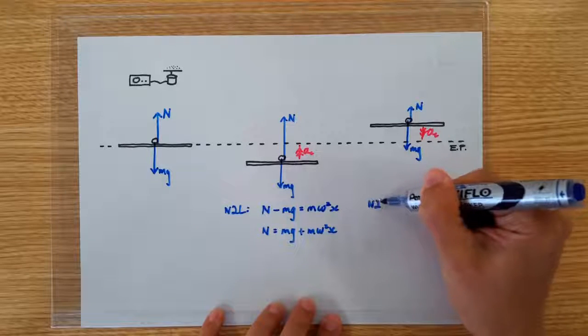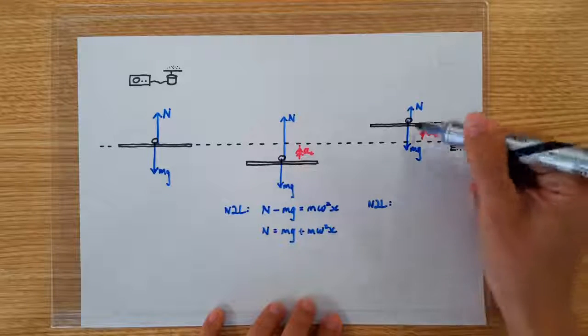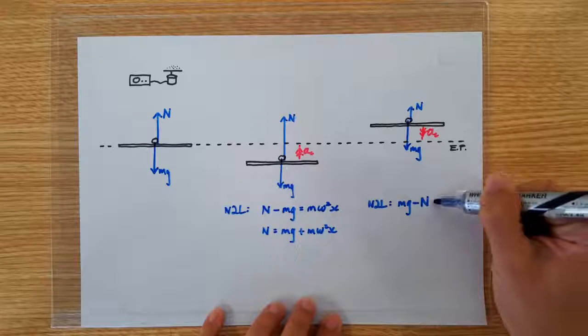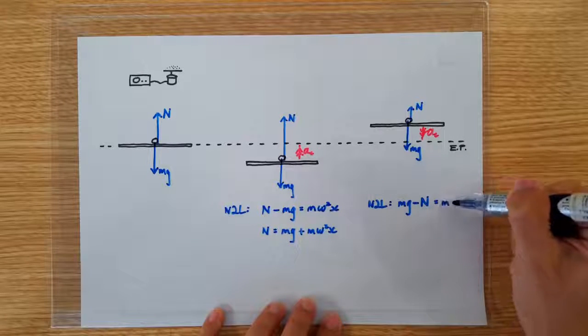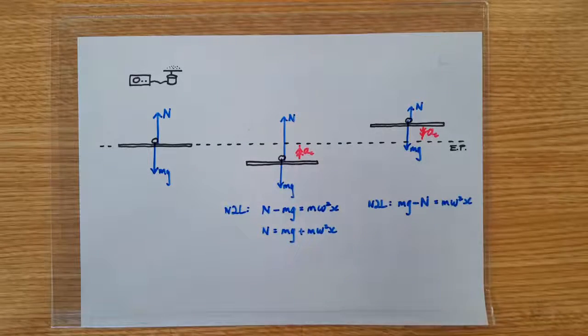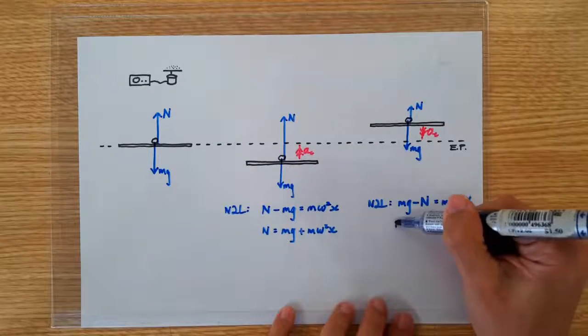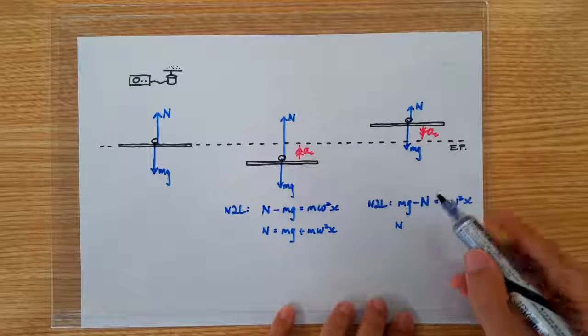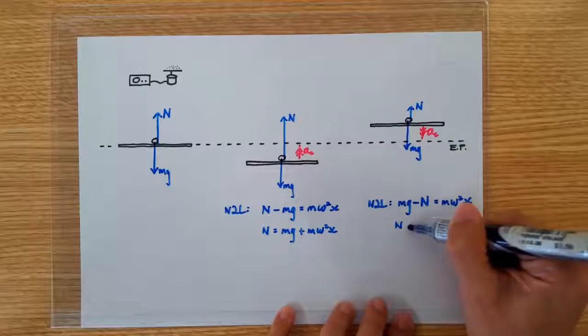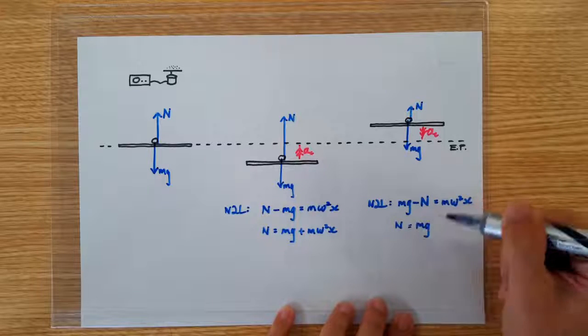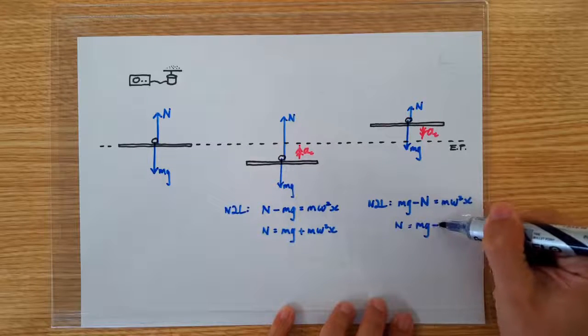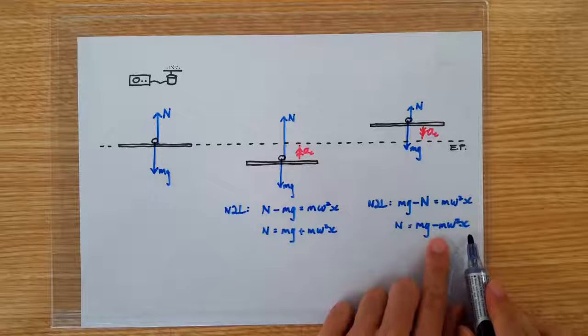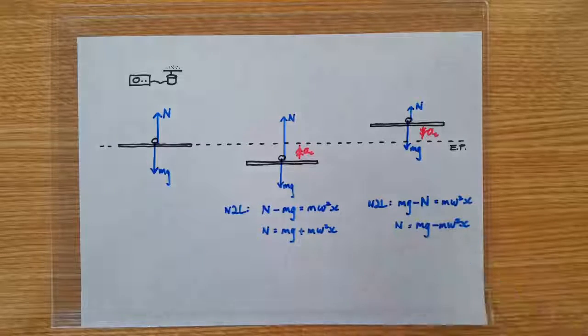In terms of Newton's second law, we can write the downward weight minus the upward normal contact force is equal to m omega square x. So the mathematics show us very clearly that whenever the plate is oscillating above the equilibrium position, the normal contact force acting on the sand will be smaller than the weight by this amount. And this amount is again the restoring force that's required for the SHM.